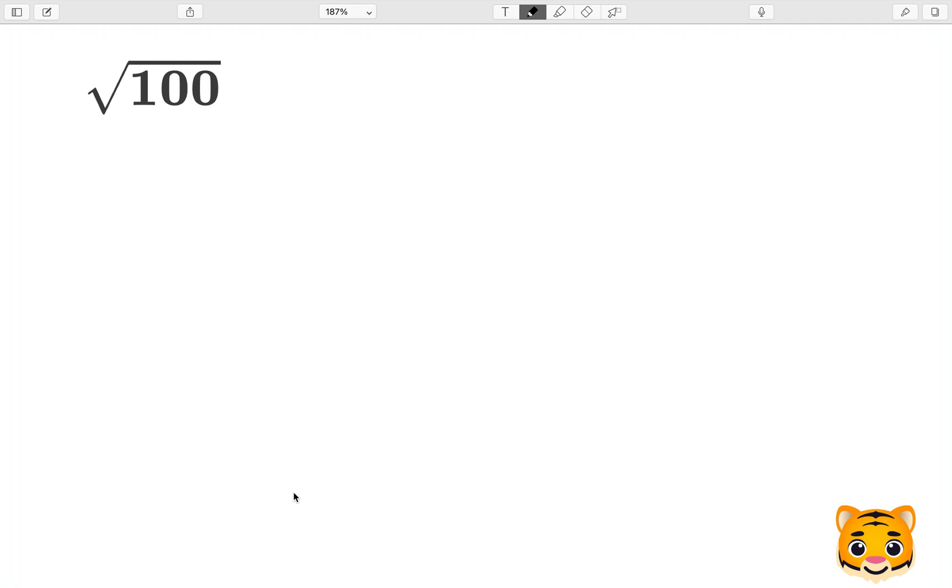In this example, we will be finding the square root of 100. In order to find the square root of 100, or any value, usually we find the factors of that value, then we expand it out using a math rule, and then we simplify.